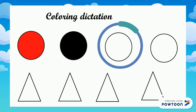Now let's see the color yellow. Circle number 3 is yellow. Color circle number 3 yellow.